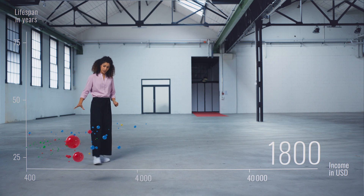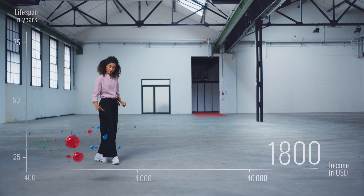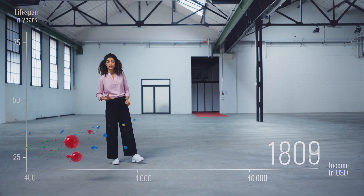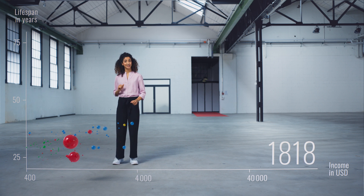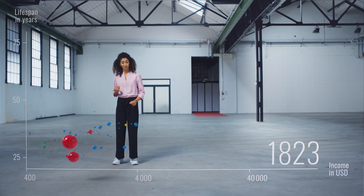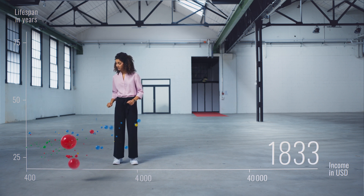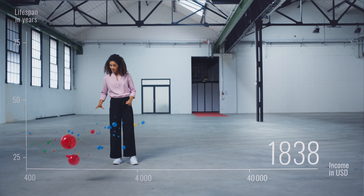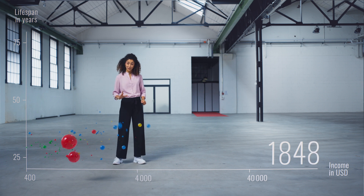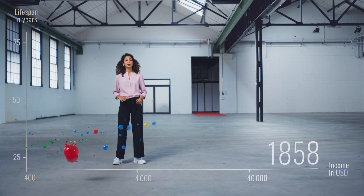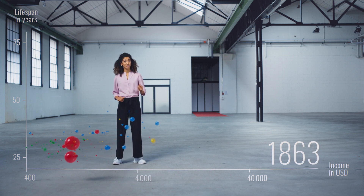But as we go through time, the industrialization in Europe boosts and drives the economy. Initially, the countries in Africa remain at the bottom and make little progress. Income and life expectancy increase and countries tend to move to the upper right-hand corner.